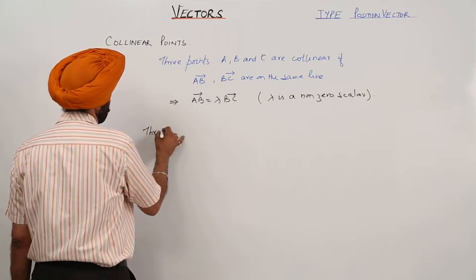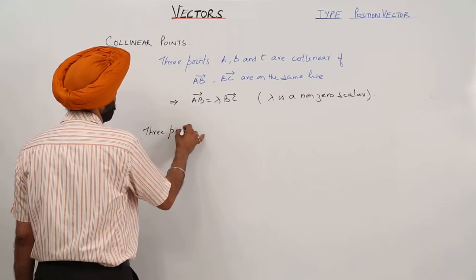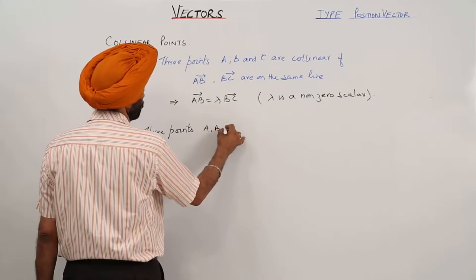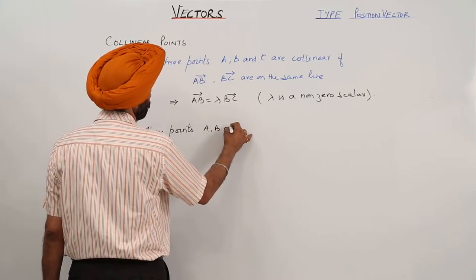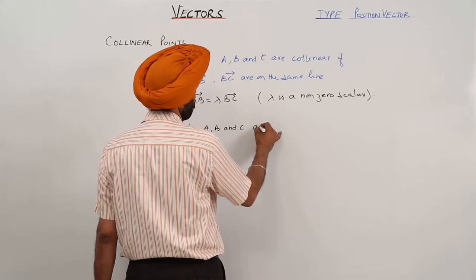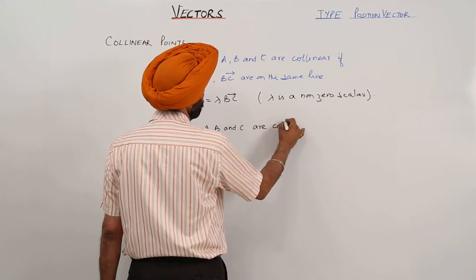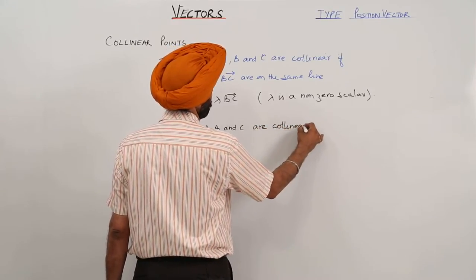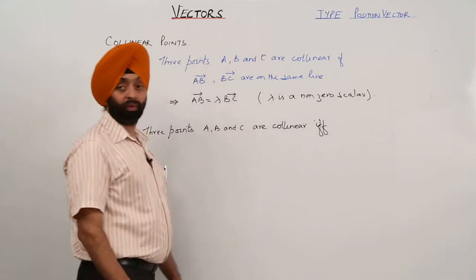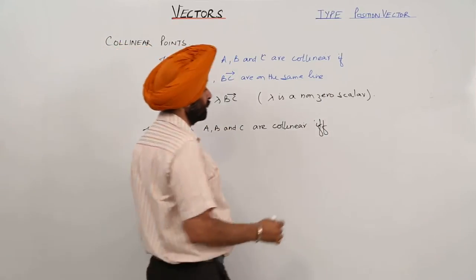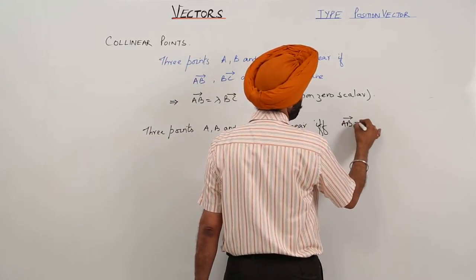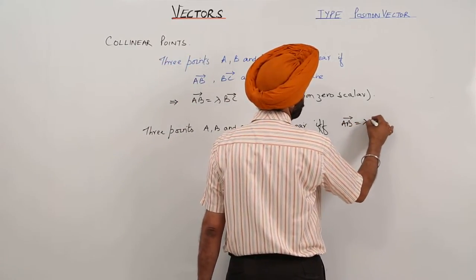Three points A, B, and C are collinear if and only if vector AB is equal to lambda times vector BC, where lambda is some non-zero scalar.